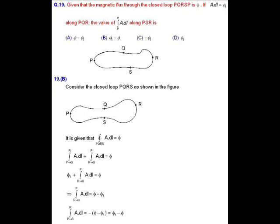MCQ question number 19. Given that the magnetic flux through the closed loop PQRSP is phi, the line integral from P to R along PQR is phi 1. Then we have to find out the line integral from P to R along path PSR. So according to figure, the total magnetic flux along PQRSP is closed integral from PQRSP A dot dl equals to phi.